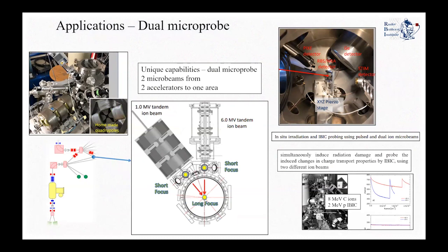Before I close, here are some of our future activities. What we aim for is a new microprobe — it is better to have two microbeams on your target. You can see our currently under development new microprobe. So far from our one megavolt tandetron accelerator, we have managed to focus the beam down to 250 nanometers. We have the option of two working distances for each accelerator — long focus and short focus — giving us the unique opportunity to have two microbeams from two accelerators in one area.